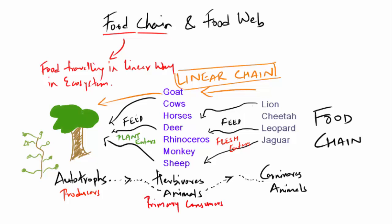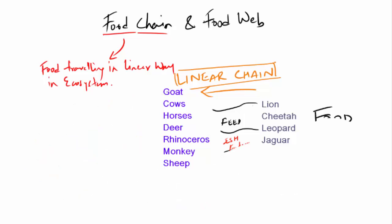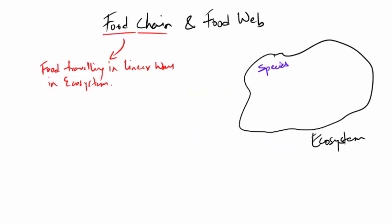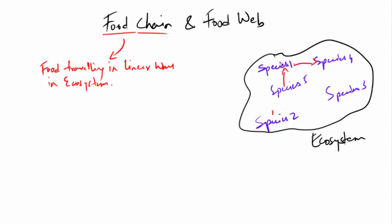In an ecosystem, there are many types of species that exist, and there are numerous food chains. You will see many species eating another species for food and energy, and that's how you will come across many food chains in an ecosystem.